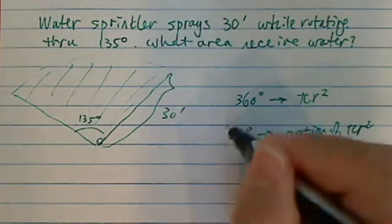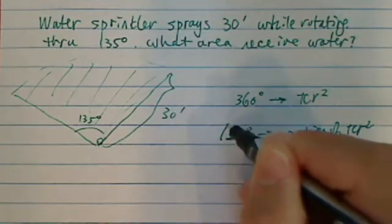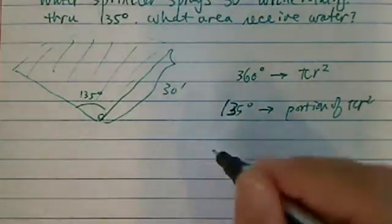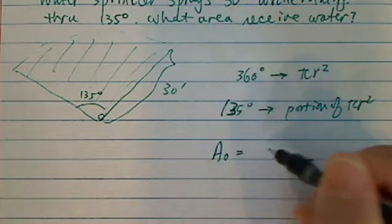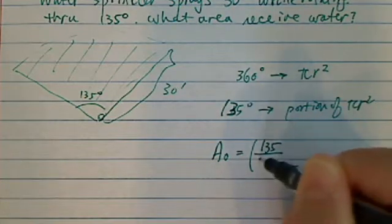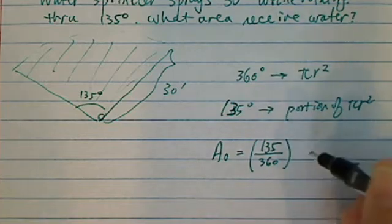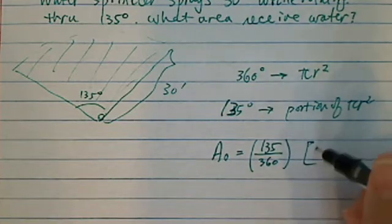Well, how big of a portion? Let's make this as 135. How big of a portion? Well, that's easier to find if you recognize it's 135 over 360 portion, pi r squared.